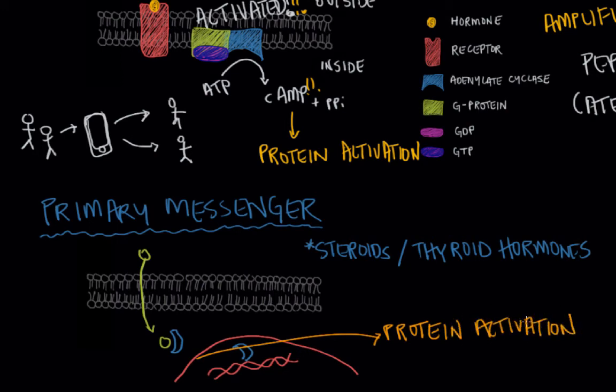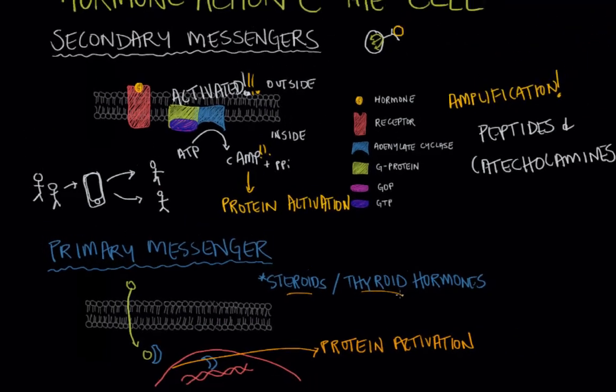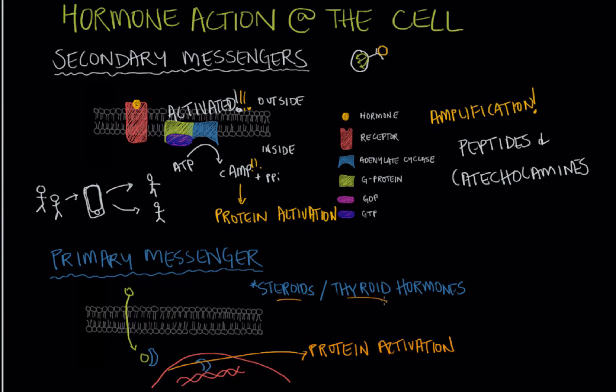This process has quite a few less moving parts than the secondary messenger system did. But again, it stems back to the fact that these are steroid and thyroid hormones that are typically lipid-based and are capable of crossing through the cell membrane on their own, so they don't need all of that extra machinery set up for them. These are both primary messengers and secondary messengers, and those are the two main processes by which hormones act on the cell that they're created to target.